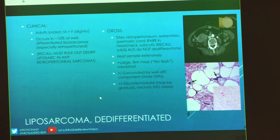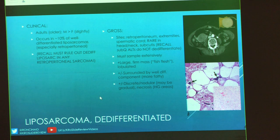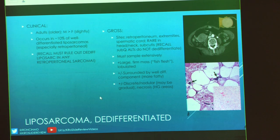Sites: retroperitoneum most commonly, as well as extremities, spermatic cord — so not just lipomas of the spermatic cord, you also need to think de-diff liposarcs — and rarely in head and neck subcutis. Note that subcutaneous ALTs or well-differentiated liposarcomas do not de-differentiate. So if you have a very superficial ALT and it looks like it's de-differentiated, then you probably never had an ALT to begin with. Because these can involve well-differentiated liposarcomas, they must be extensively sampled. They are often surrounded by well-differentiated components, so it's going to look very much like normal fat with some slight variations — atypical nuclei with relatively large adipocytic content.